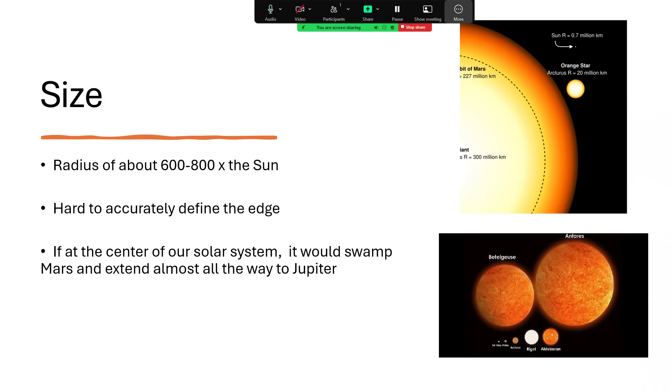But if this was at the center of the solar system, the inner part of the solar system would be toast. This would have swamped all the inner planets right out and beyond Mars, out into the asteroid belt, and going almost all the way out to Jupiter's orbit. Absolutely enormous.